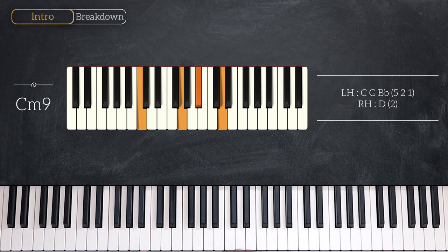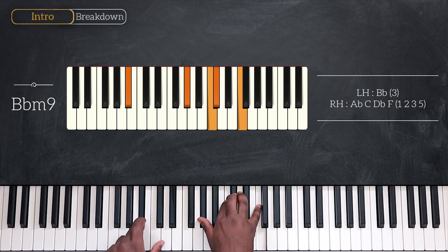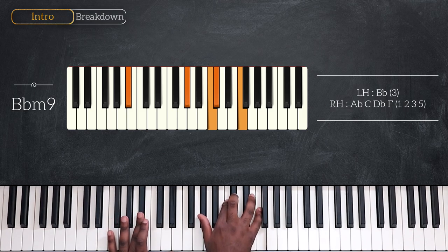After that we're going down a whole step to play B flat minor 9. B flat on your left, then you have A flat, C, D flat and F.